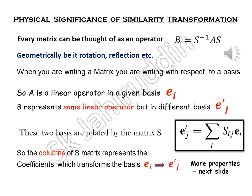That e'_j, your new basis in which B is written, equals the sum over i of S_ij times e_i. Each and every column of your S matrix represents the coefficients which transforms your basis e_i to e'_j, means e basis to e' basis.